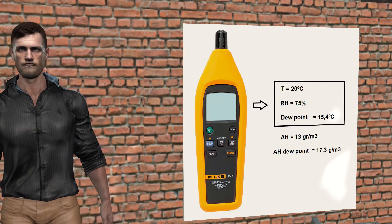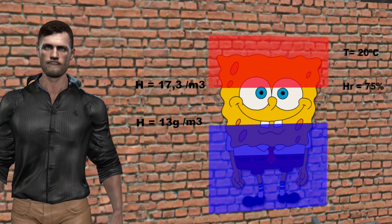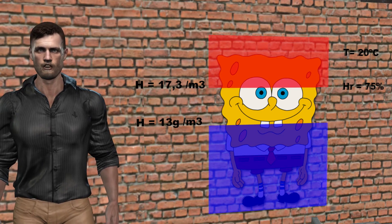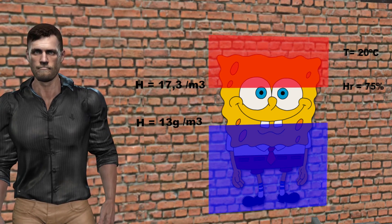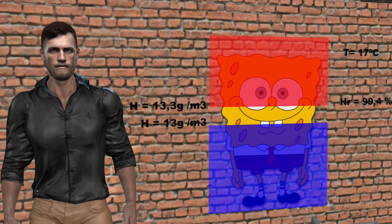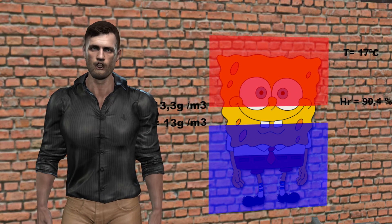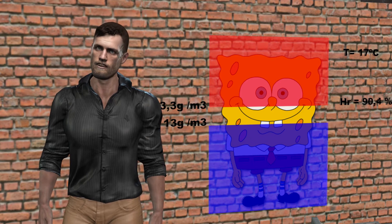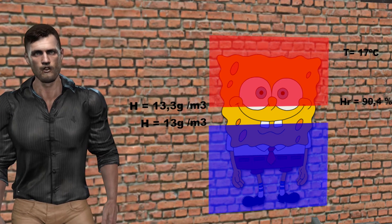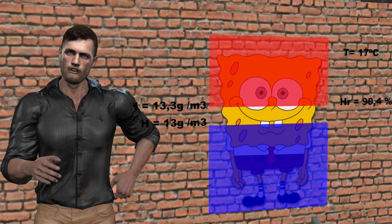Now let's invite our friend SpongeBob to our living room. After a certain time, Bob has absorbed those 13 grams per cubic meter present in the air. Now suppose that Bob moves to another room, a little cooler, where the temperature is 17 degrees Celsius. Under these conditions, Bob's capacity to store water vapor will have dropped to 13.3 grams per cubic meter, although he still has room to hold a little more water vapor. Since he has 13 grams and his total capacity is 13.3 grams, his relative humidity is 90.4%.